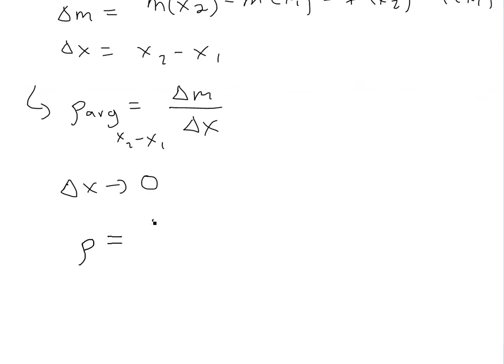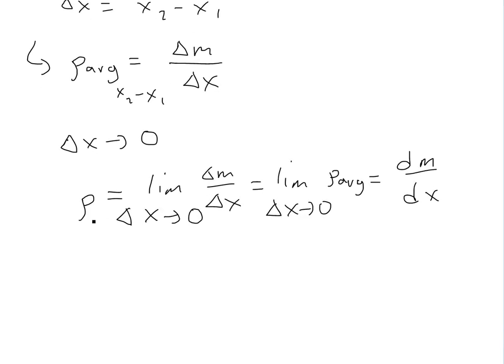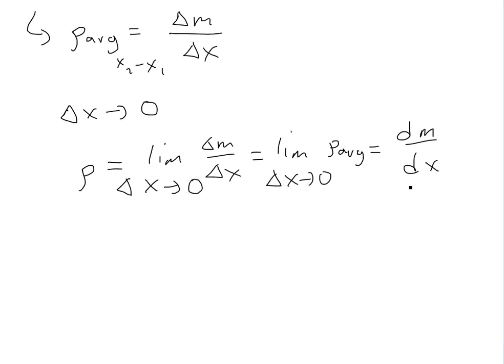So rho is equal to limit as delta x goes to zero of delta m over delta x. This is just another way of writing the definition of derivative, or this equals the limit as delta x goes to zero of the average linear density. Then this finally you could write down as derivative dm over dx. So the linear density is the derivative of the mass in terms of the length, dm over dx.